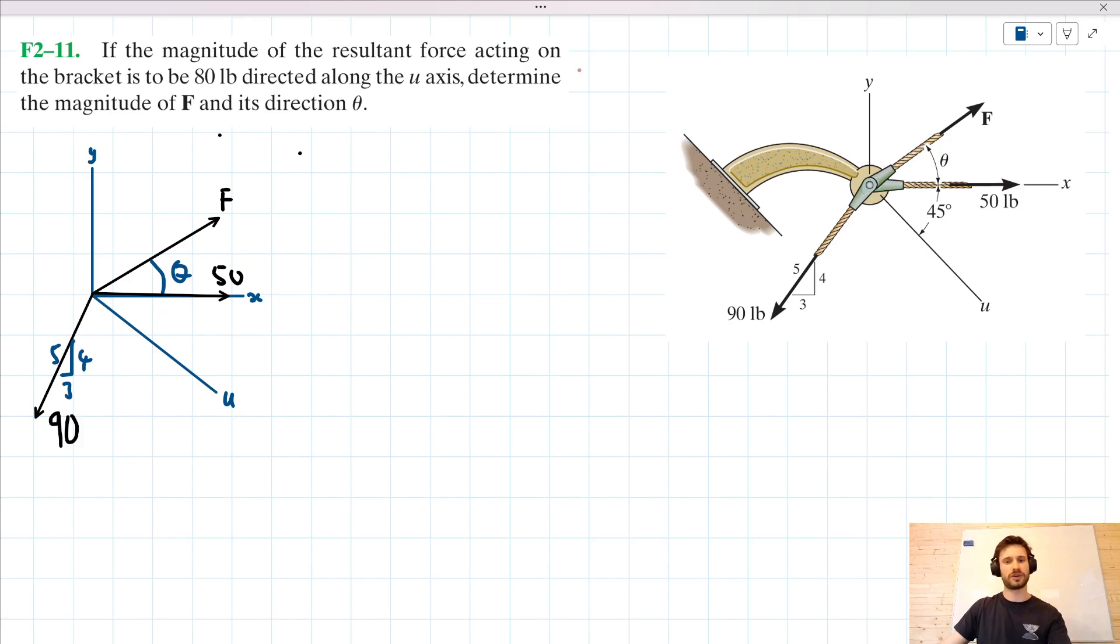Now, I'm going to do something that maybe I wouldn't ordinarily do, which is add the resultant force to this diagram. And what this can help us see is this idea that when we add force F, this 50-pound force here, and this 90-pound force here together, what we get is this 80-pound force acting along the u-axis. When we add those three forces together, we get that 80-pound force.